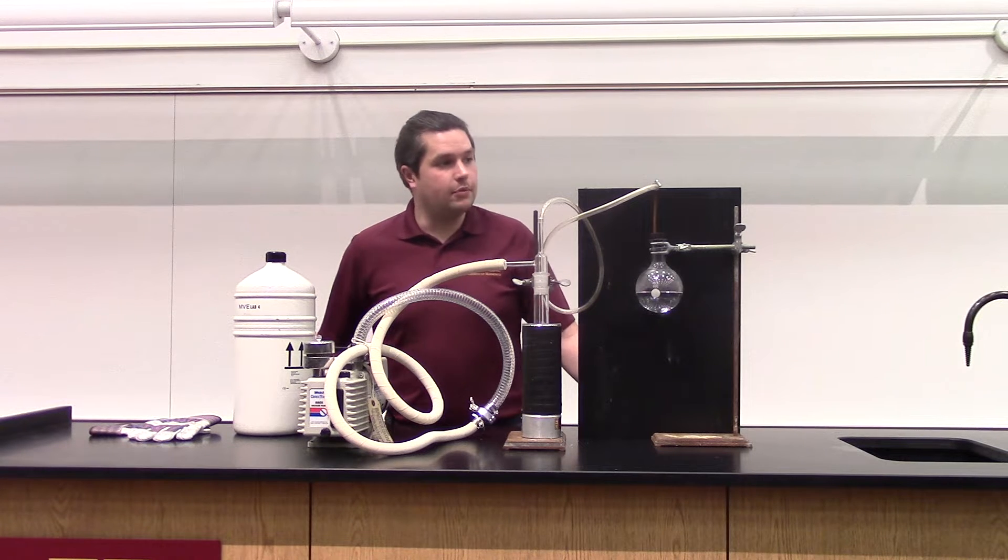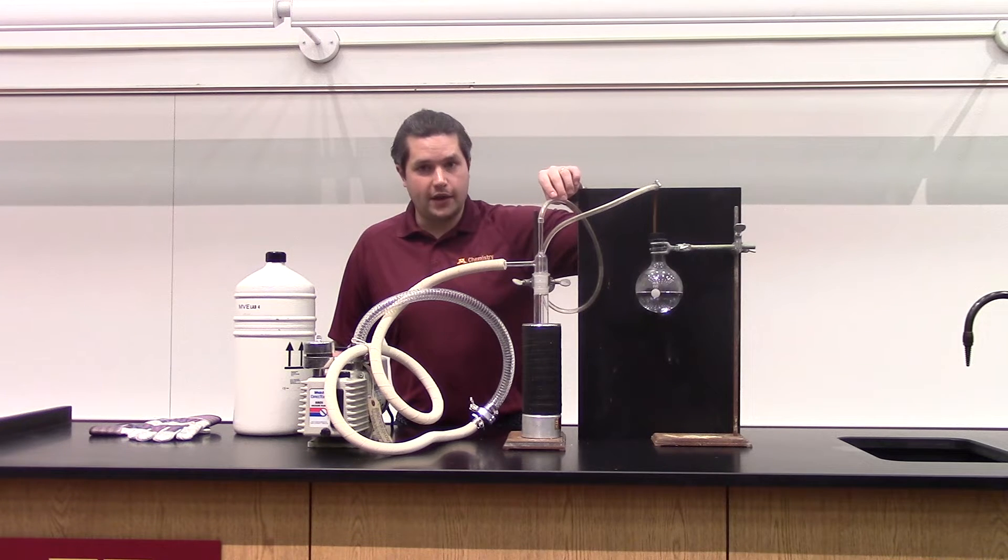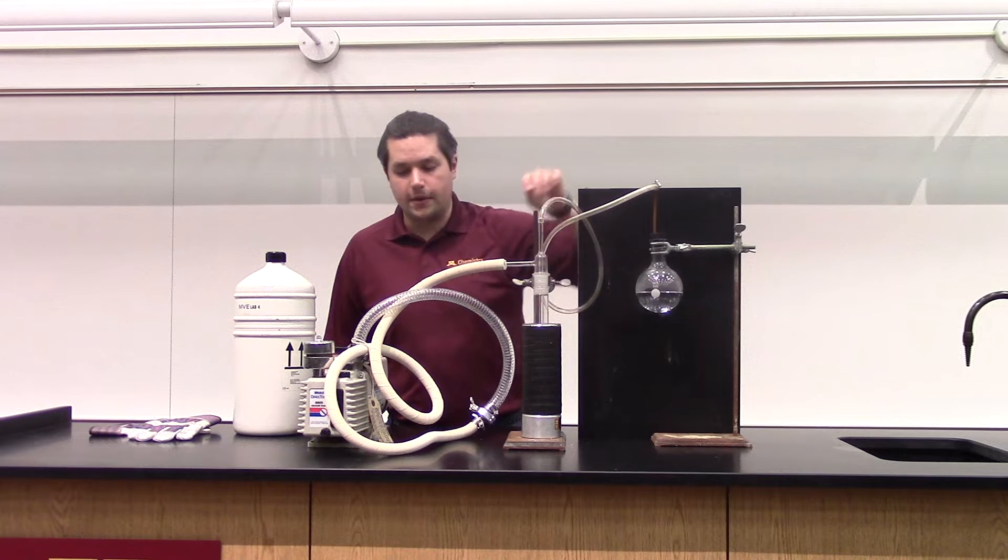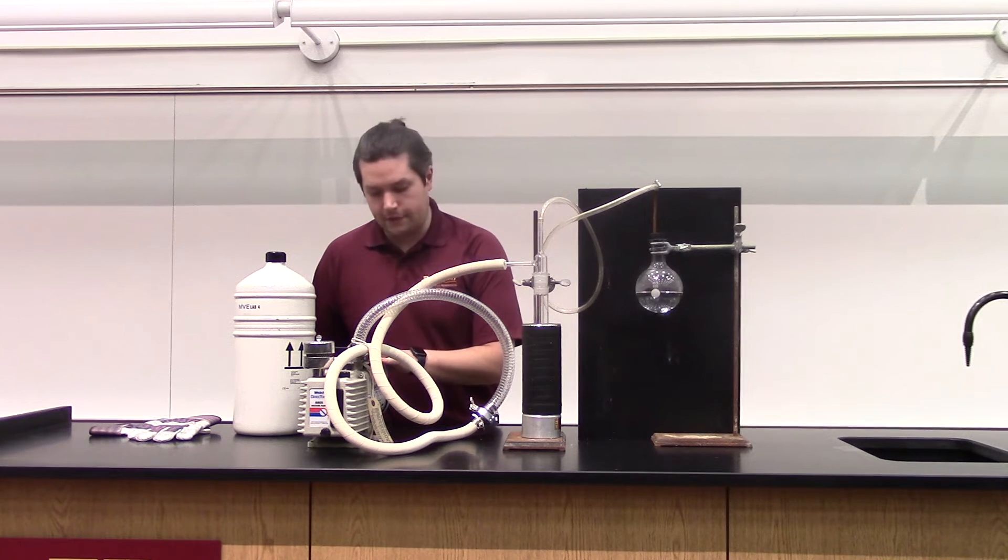To walk you through this apparatus, this is a round bottom flask filled with distilled water. It's connected to a vacuum trap to collect anything that might form as we're pulling the vapor out. And then this is a vacuum pump that is going to remove the vapor from the flask.